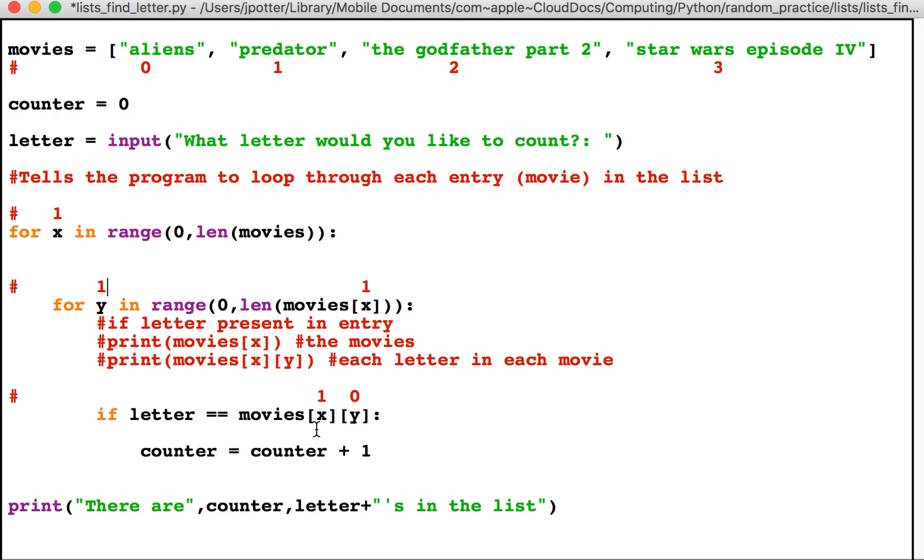Because we haven't found an 'a', so we now look at the first index of the list which is 'predator', and then the first index number which is 'r'. Is it an 'a'? No, so same thing happens, loop goes up again.